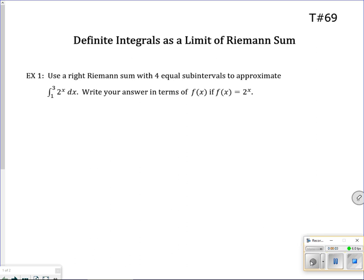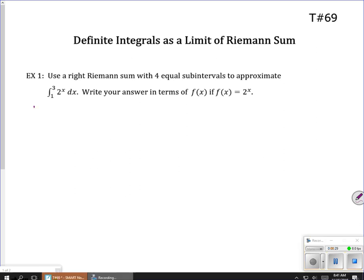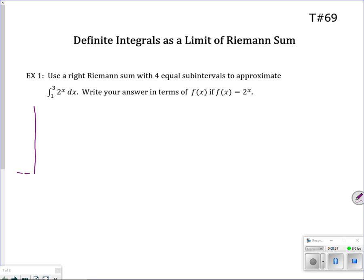All right, let's look at definite integrals as the limit of a Riemann sum and kind of finish this up. All right, using a right Riemann sum with four equal subintervals to approximate that integral.